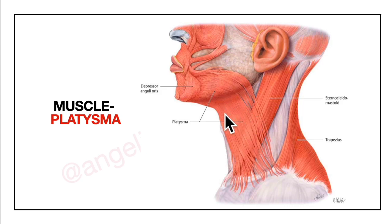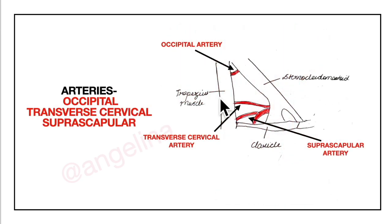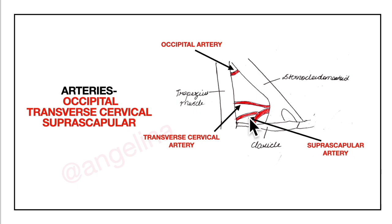We have the platysma muscle. Looking at the arteries, we have the occipital artery, transverse cervical artery, and the suprascapular artery.